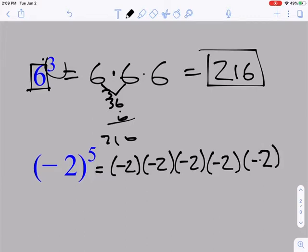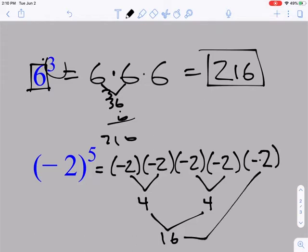Negative 2 times negative 2 gives me positive 4. We have another negative 2 times another negative 2, that gives you another positive 4. Positive 4 times positive 4 gives me 16, and then if I multiply that by this last negative 2, I get negative 32.